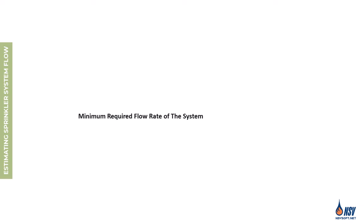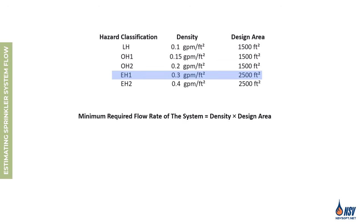We can estimate the minimum required flow rate of a sprinkler system by knowing two key parameters: the density and the design area. To do this, we simply multiply the required density by the design area. For example, in extra hazard group 1 occupancies, NFPA 13 specifies a minimum density of 0.3 gallons per minute per square foot and a design area of 2,500 square feet. Based on these values, the minimum required flow rate would be 750 gallons per minute.